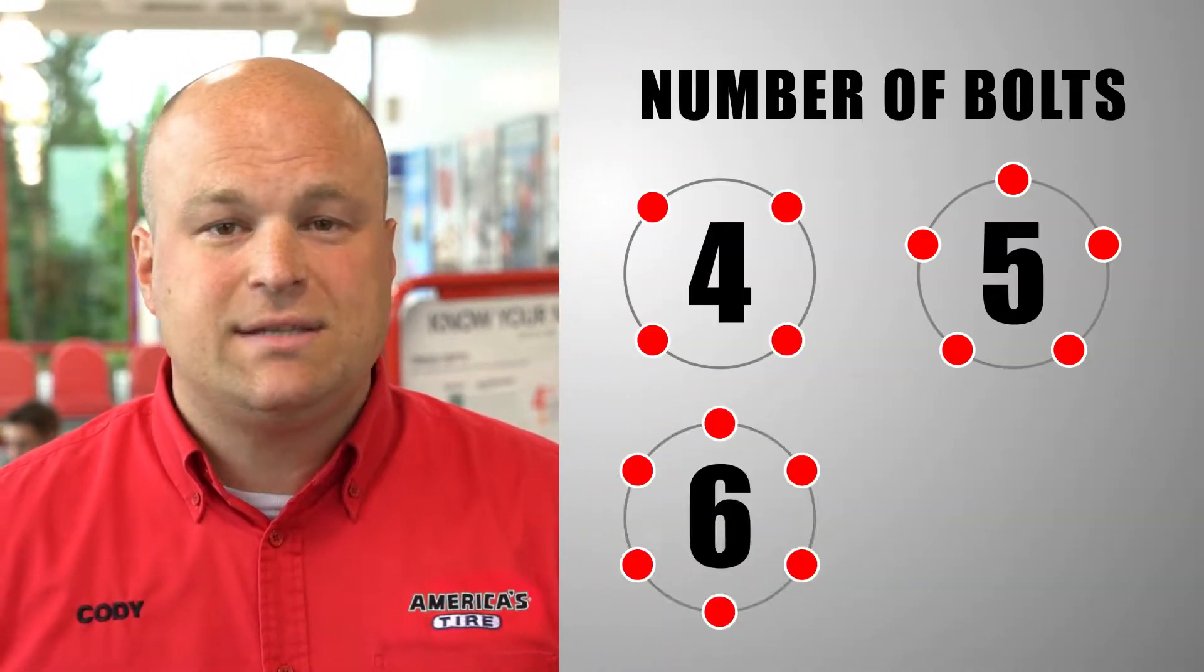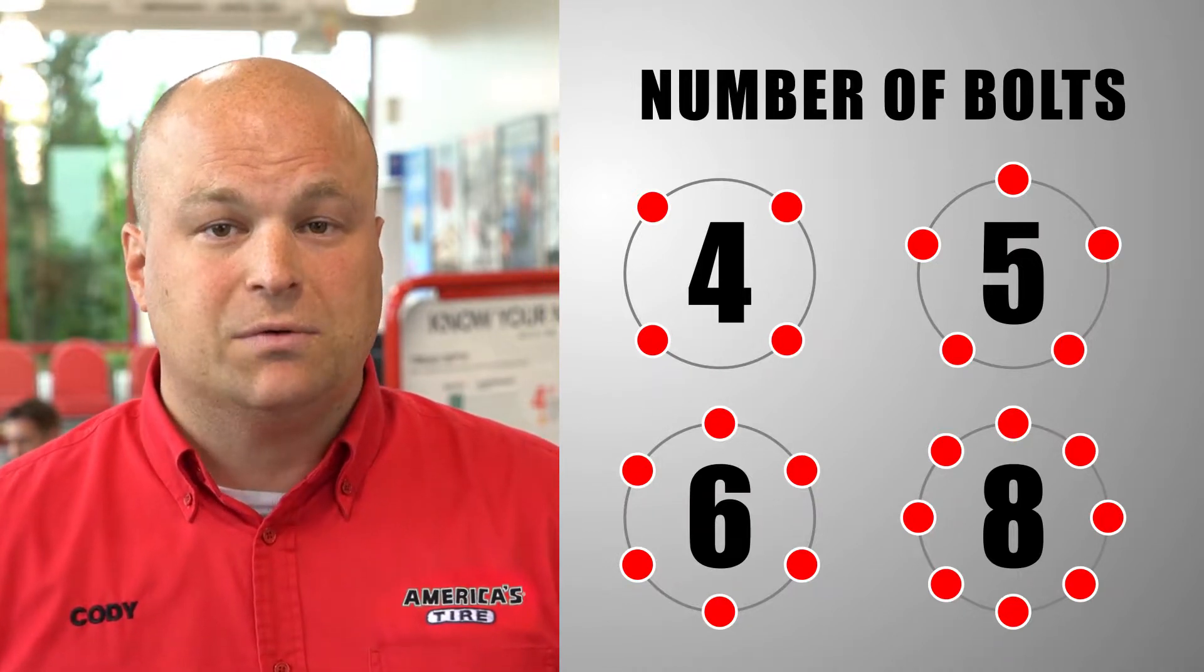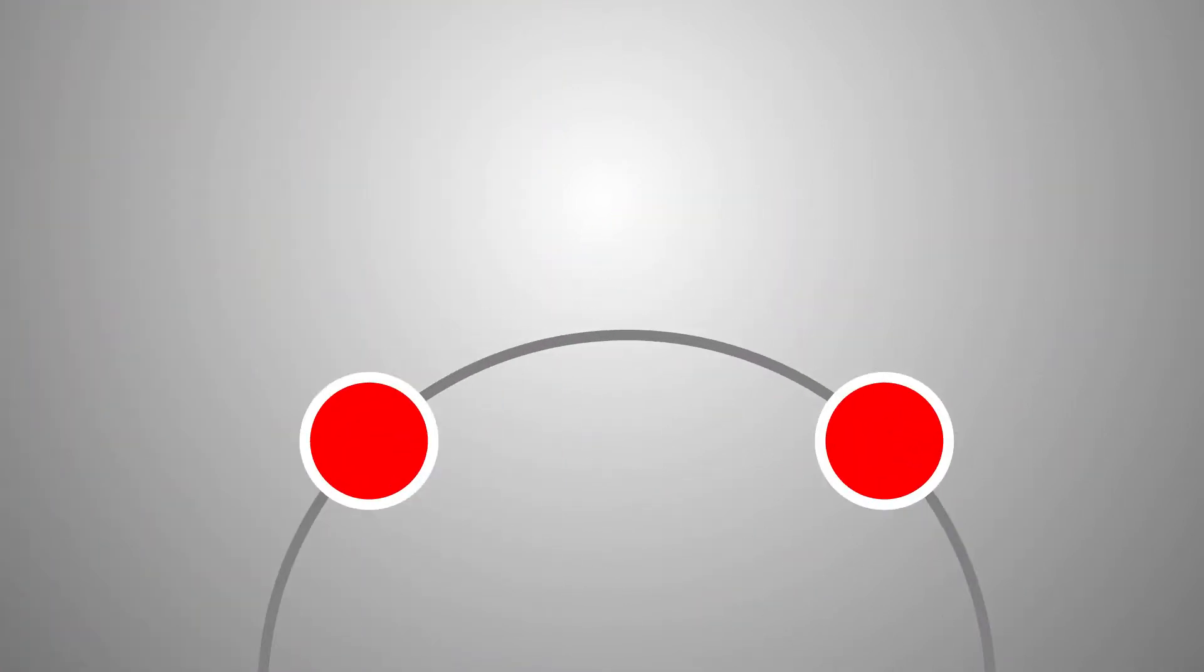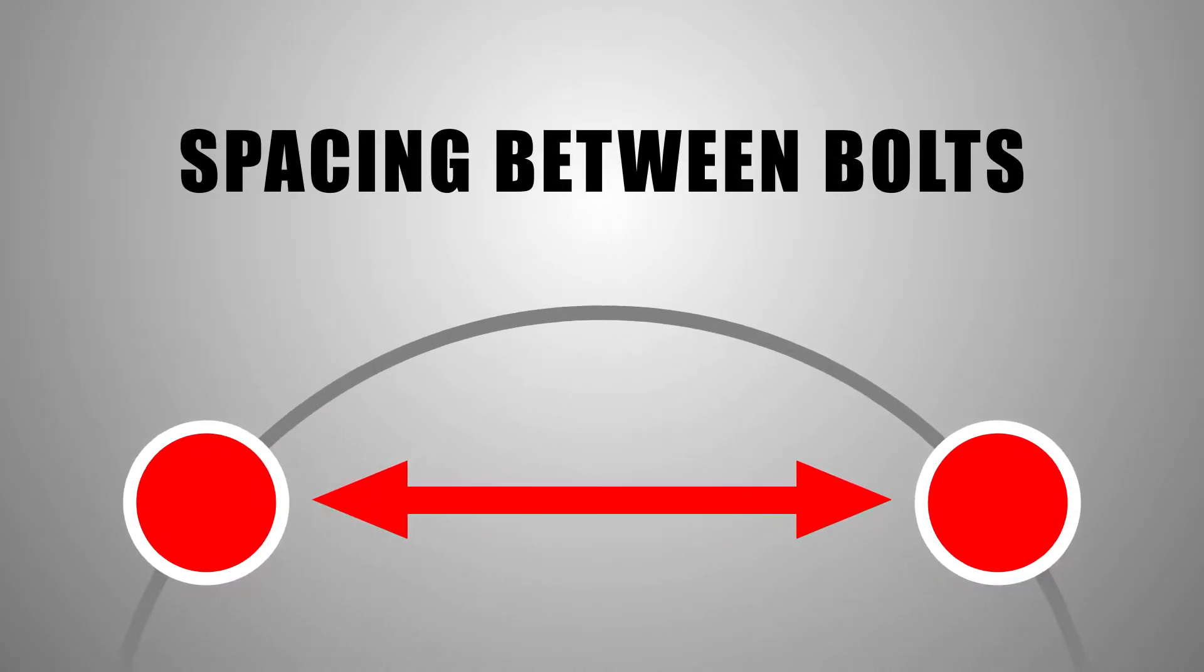Most vehicles will require a wheel with a four, five, six, or eight lug bolt pattern, but it's important to know that just because the wheel has the right amount of bolt holes doesn't mean it will fit. The bolt holes also need to be correctly spaced to align with the vehicle studs.